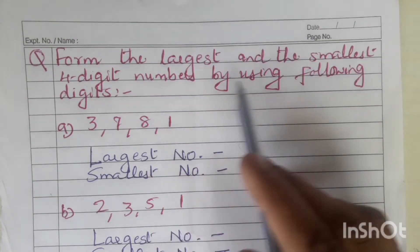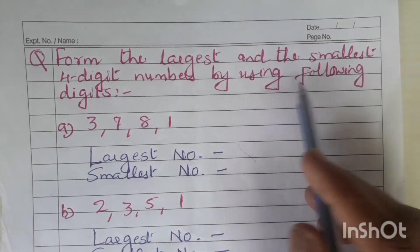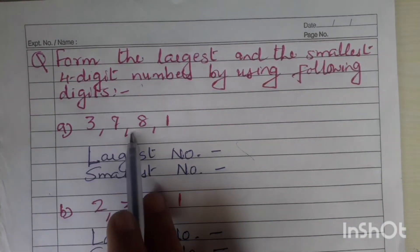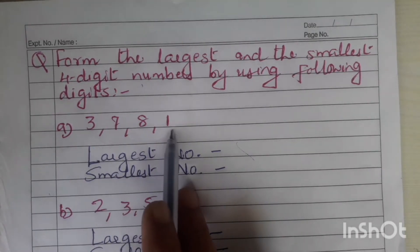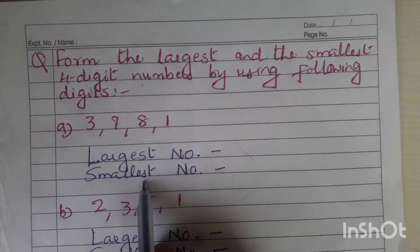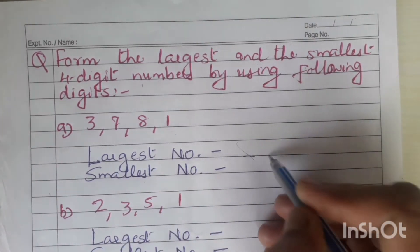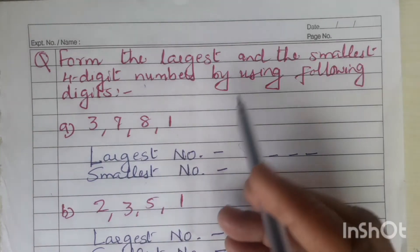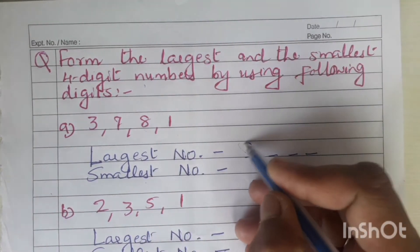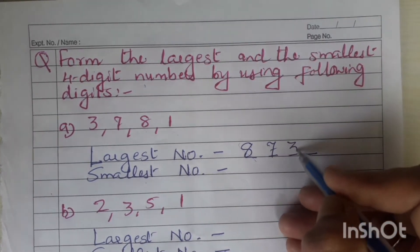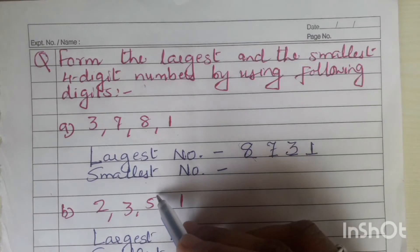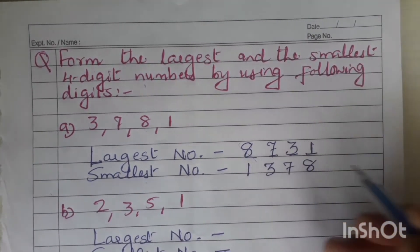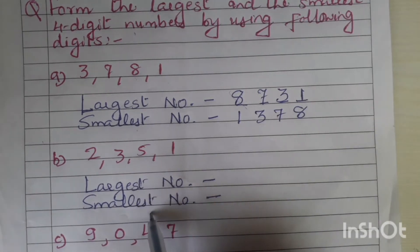Now, form the largest and the smallest 4-digit numbers using the following digits. Only 4 digits are given, so we use all of them. To form the largest number, arrange digits in descending order: 8, 7, 3, 1. To form the smallest number, arrange in ascending order: 1, 3, 7, 8.